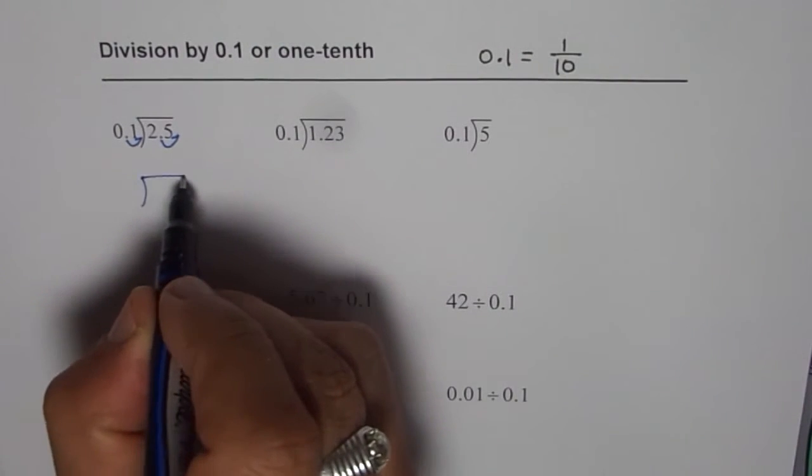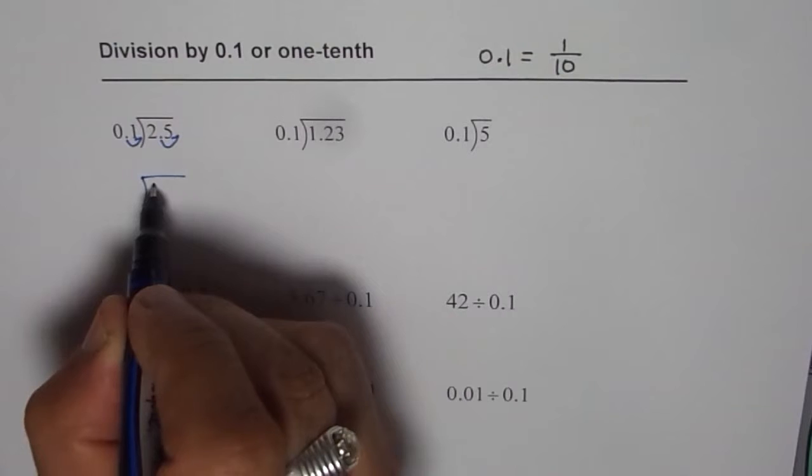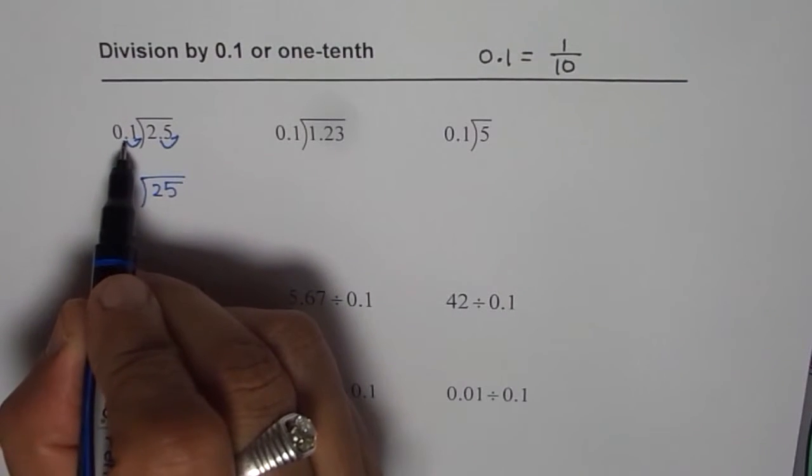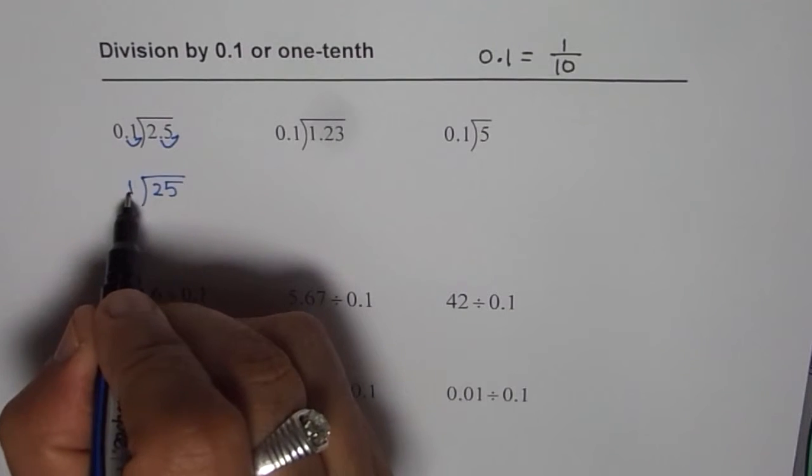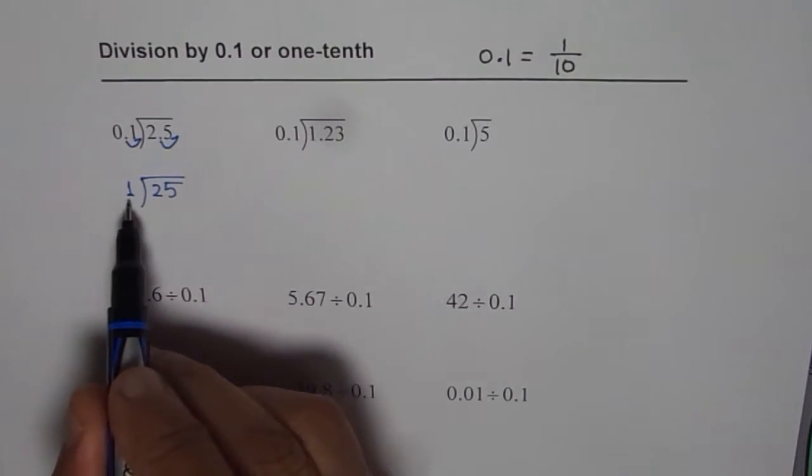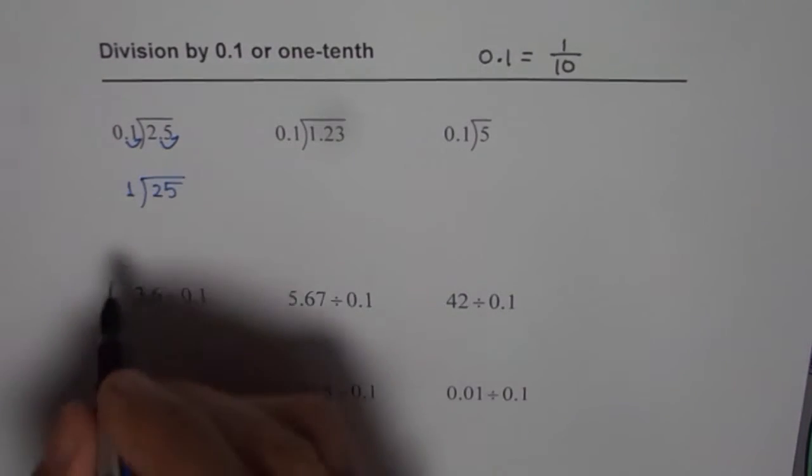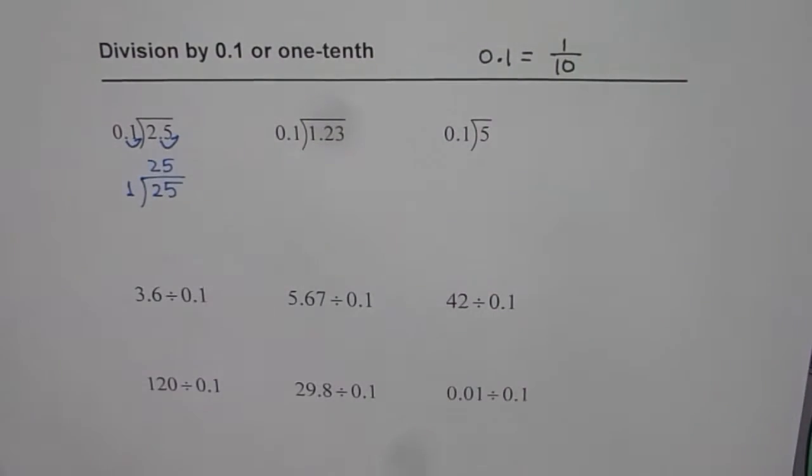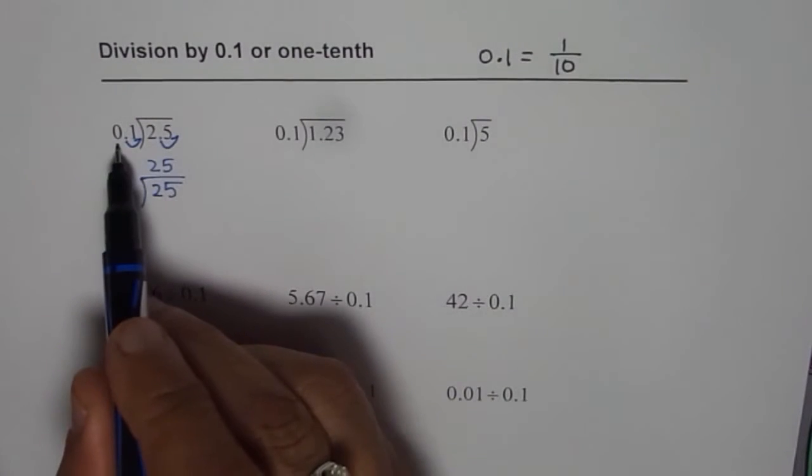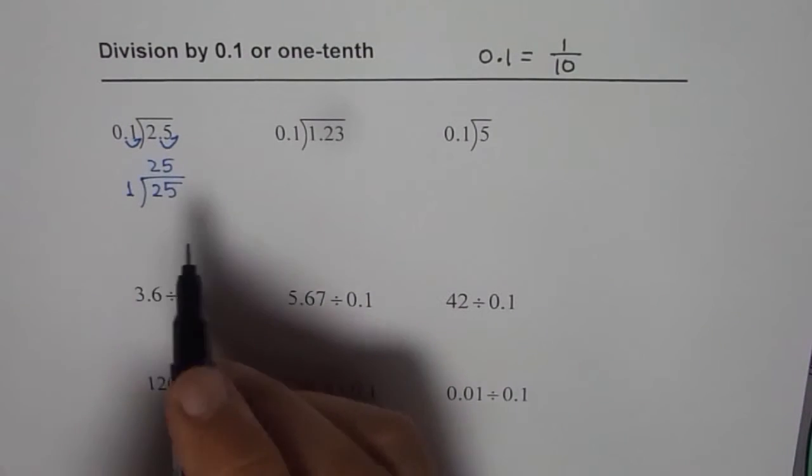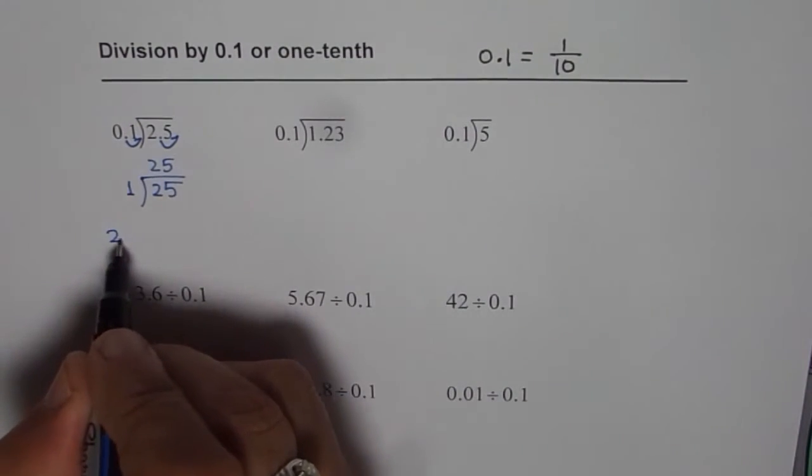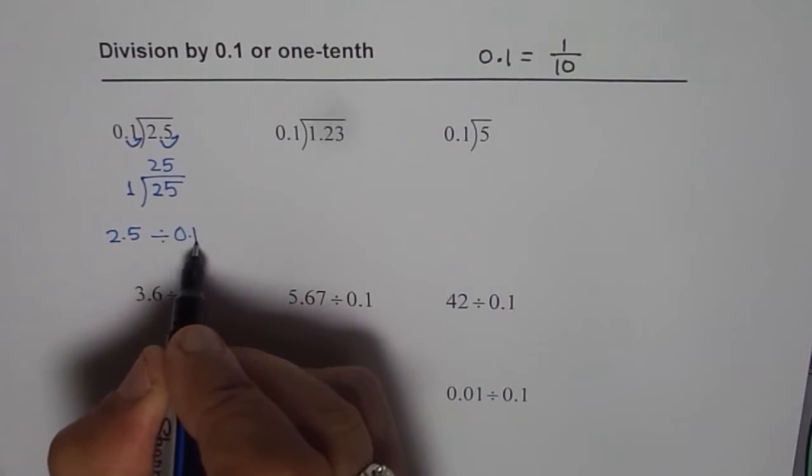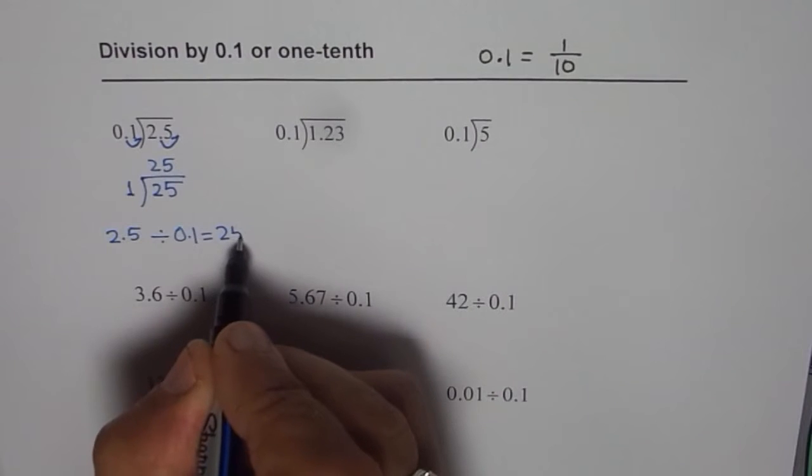What do we get? We get, when I move this one unit to the right, I get 25 here. And when I move this decimal one unit right, I get 1. So I have to divide 25 by 1 and you know this is equal to 25 itself, correct? So 2.5 divided by 0.1 is 25. That is what we get.